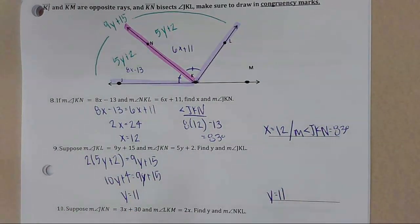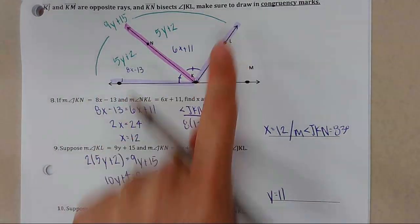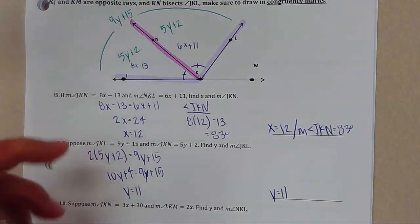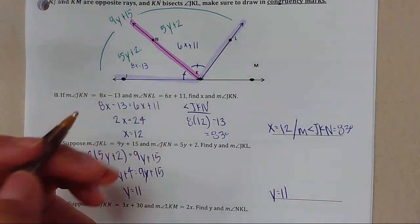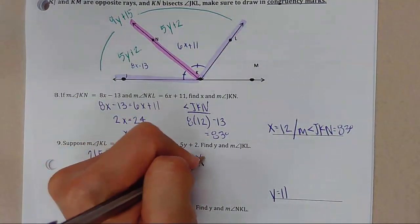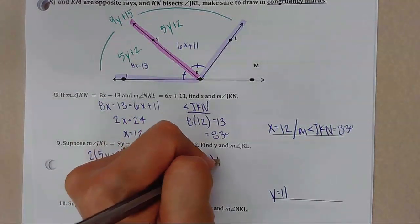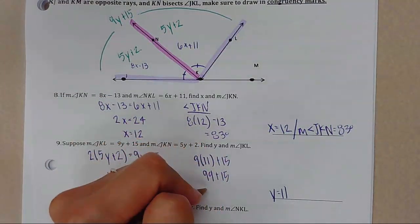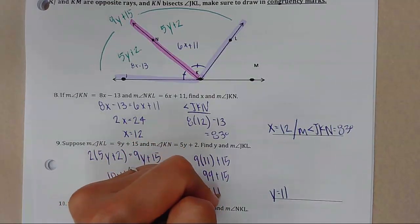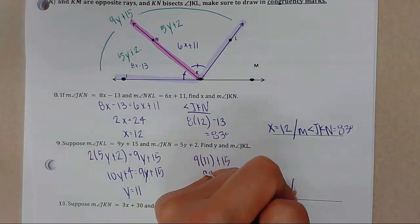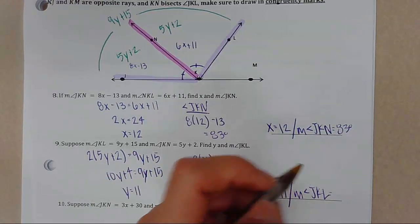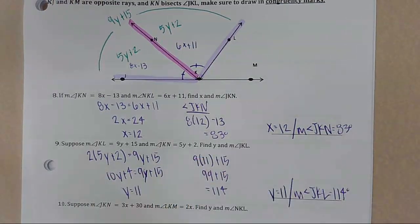With Y = 11, find angle JKN: 9(11) + 15 = 99 + 15 = 114. So the measure of angle JKN equals 114 degrees.